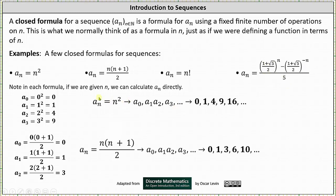Below I've generated the first several terms of the sequences given by a sub n equals n squared and a sub n equals n times (n plus one) divided by two. For the first sequence, a sub n equals n squared: to find a sub zero we substitute n equals zero, to find a sub one we substitute n equals one, to find a sub two we substitute n equals two, and so on. The first several terms are zero, one, four, nine, sixteen, and so on.